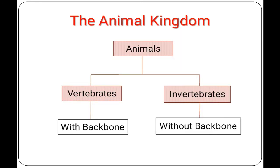The animal kingdom is broadly divided into vertebrates and invertebrates. Vertebrates are animals with a backbone, while invertebrates are animals without a backbone. Do you have a backbone? Feel the back of your body with your fingers. All human beings have a backbone and are included in the group called vertebrates. There are about 47,000 different kinds of vertebrates on earth, but more than 1,200,000 different kinds of invertebrates.